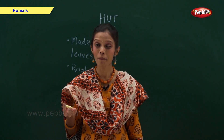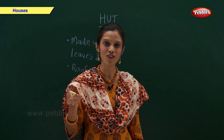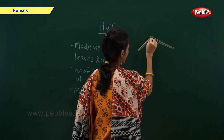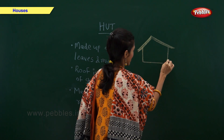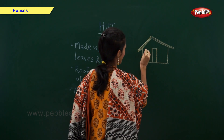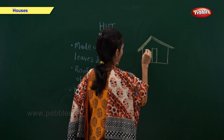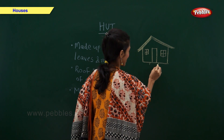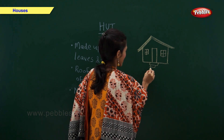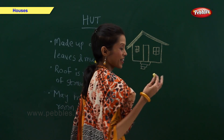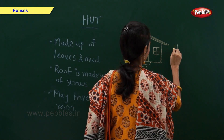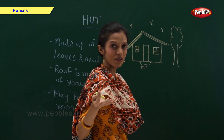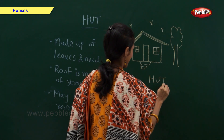Friends, shall we draw a picture of a hut? Will you all help me? Come on, let us draw. This is the roof made up of straws. This is the door. And these two are windows. These are the staircase of the hut. Now let us draw one small tree. Did you all like it? Will you all try it in your notebook?